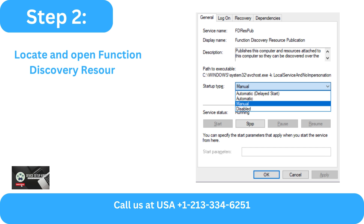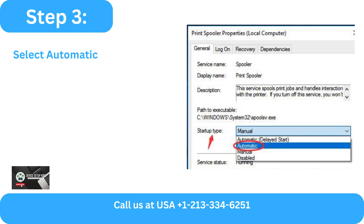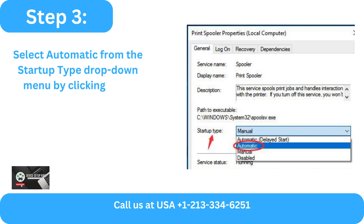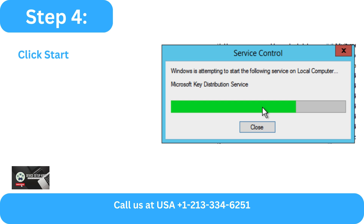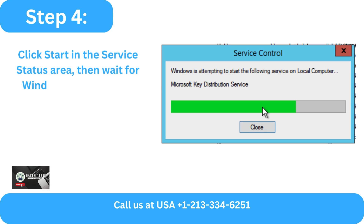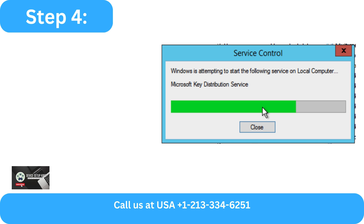Step 2 - Locate and open Function Discovery Resource Publication by scrolling down. Step 3 - Select Automatic from the Startup Type drop-down menu by clicking on it. Step 4 - Click Start in the Service Status area, then wait for Windows to launch the service.